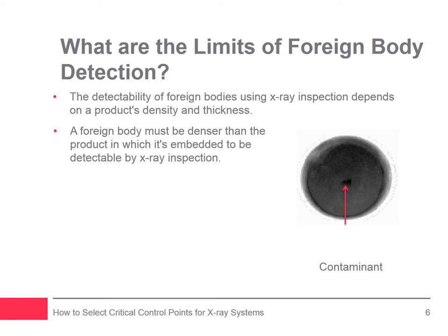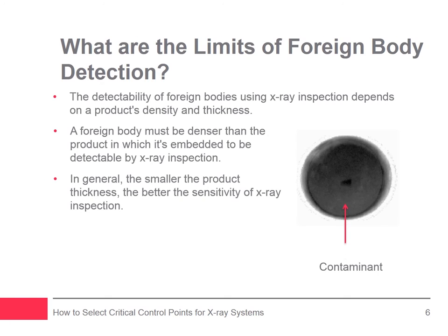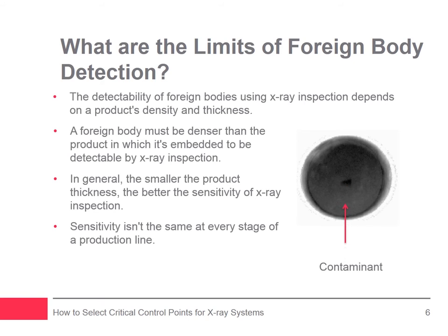A foreign body in a shallow layer of product in a bulk flow production line — for example cereals or frozen berries — is easier to detect than a foreign body hidden inside a finished, sealed pack. In general, the smaller the product thickness, the better the sensitivity of x-ray inspection. Many other factors can affect the sensitivity of an x-ray system, and sensitivity is not the same at every stage of a production line. Some locations are better than others for detecting certain foreign bodies.